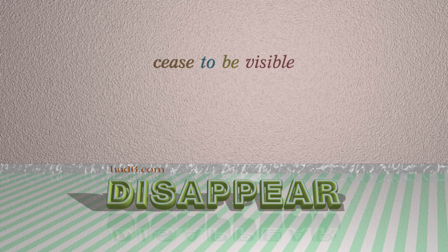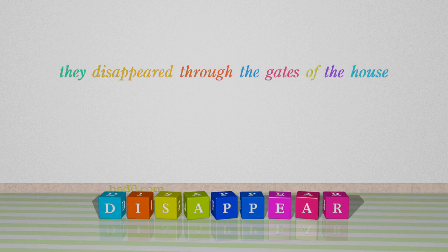Number 5: Disappear, which means cease to be visible. For example: They disappeared through the gates of the house.